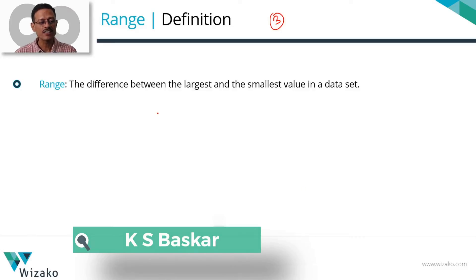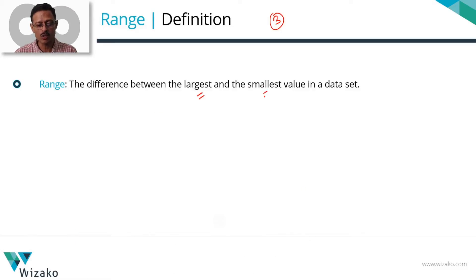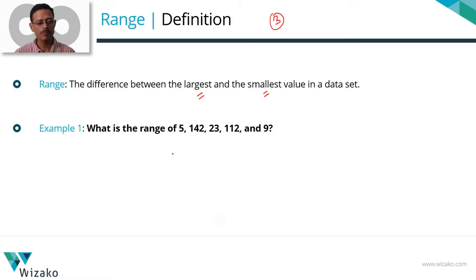How is range defined? Range is defined as the difference between the largest and the smallest value in a data set. Let's get a handle on this definition with a very simple example. We need to compute the range for these five numbers. Step 1: identify the largest number. Step 2: identify the smallest number, and then compute the difference.